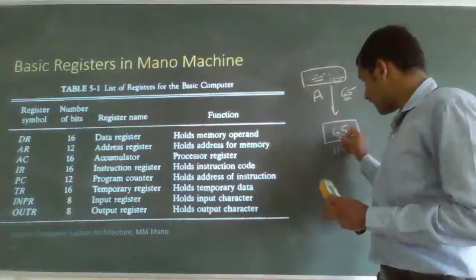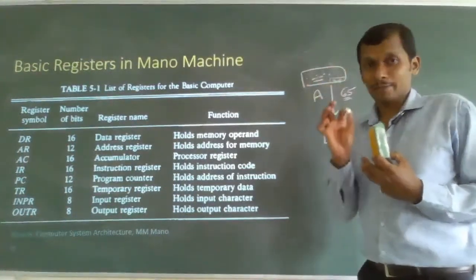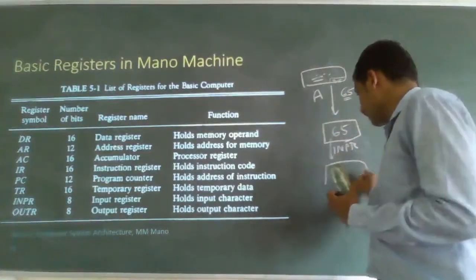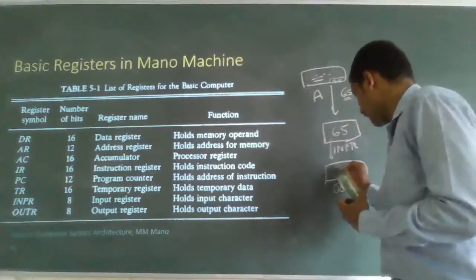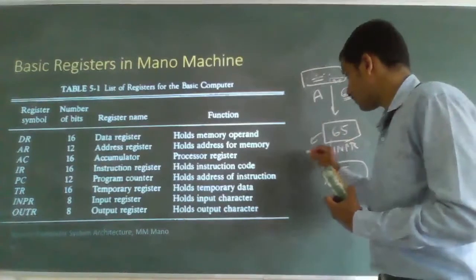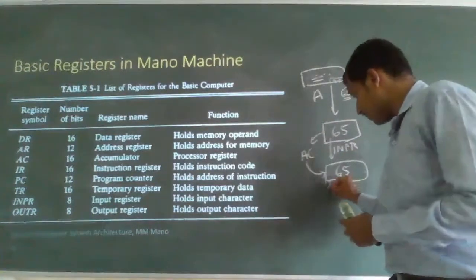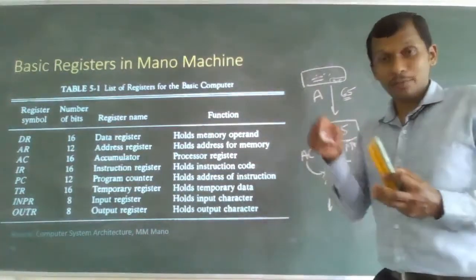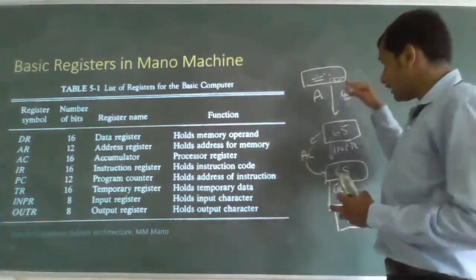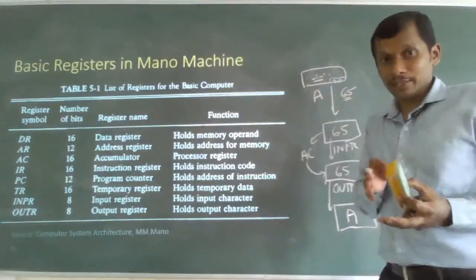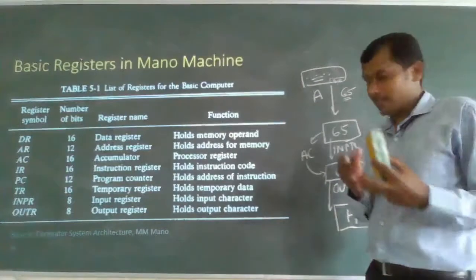Similarly, if we have character code 65 (representing 'A') and want to display it on the monitor, we transfer this data to the output register (OUTR). To do so, we first transfer 65 to the accumulator, then from the accumulator to the output register. With the proper output device connected and the correct output instructions given, the screen will display 'A'. This explains how the keyboard provides input to the processor and how data is sent to an output device via the output register.